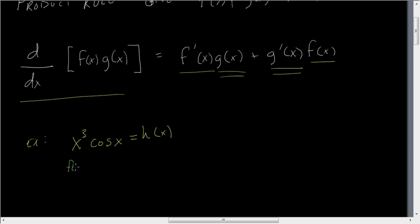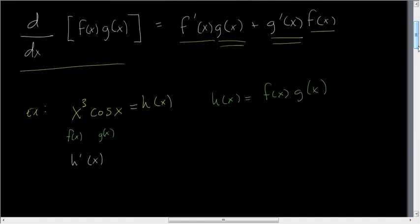x cubed is the f(x), cosine of x is the g(x), and h(x) then can be written as the product of two functions, f(x) and g(x). So if we wanted to find h prime of x, or the first derivative, then we would apply the product rule.